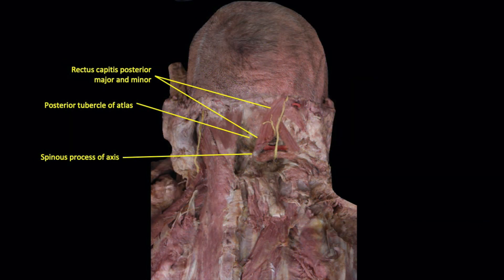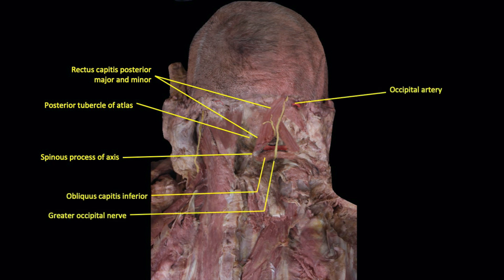Looking at the suboccipital region in a different cadaver, we again become oriented and determine the location of the rectus capitis posterior major and minor, the posterior tubercle of the atlas, and the spinous process of the axis. In addition, we note the relationship of the greater occipital nerve to the obliquus capitis inferior, and the presence of the occipital artery.